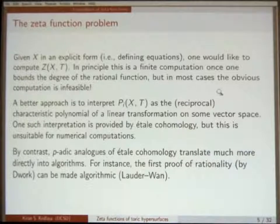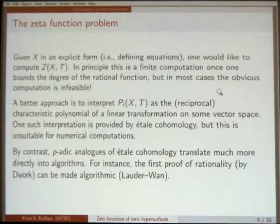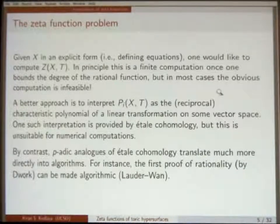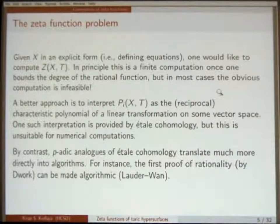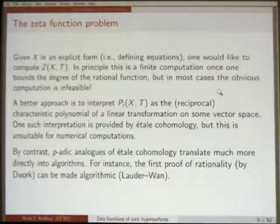A more sensible thing to do is to use an interpretation of these individual factors P_i coming from the proof of the Weil conjectures. You interpret them as the characteristic polynomial — possibly in reverse — of some linear transformation on some vector space over a field of characteristic zero. For example, étale cohomology provides such a construction, but that construction is of a largely theoretical nature. It is actually not so easy to do an explicit computation in an étale cohomology group, because somehow the algorithmic topology involves arbitrary étale covers of open subsets.